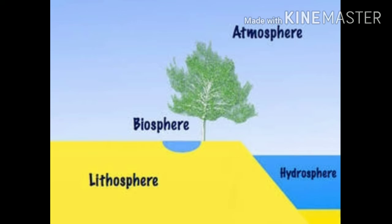Natural environment consists of four domains: land, water, air, and plants. These four domains are lithosphere, hydrosphere, atmosphere, and biosphere. Lithosphere is land, hydrosphere is water, atmosphere is air, and biosphere is living things. To remember them easily, use the mnemonic: Live Happily And Beautifully — L for lithosphere, H for hydrosphere, A for atmosphere, and B for biosphere.